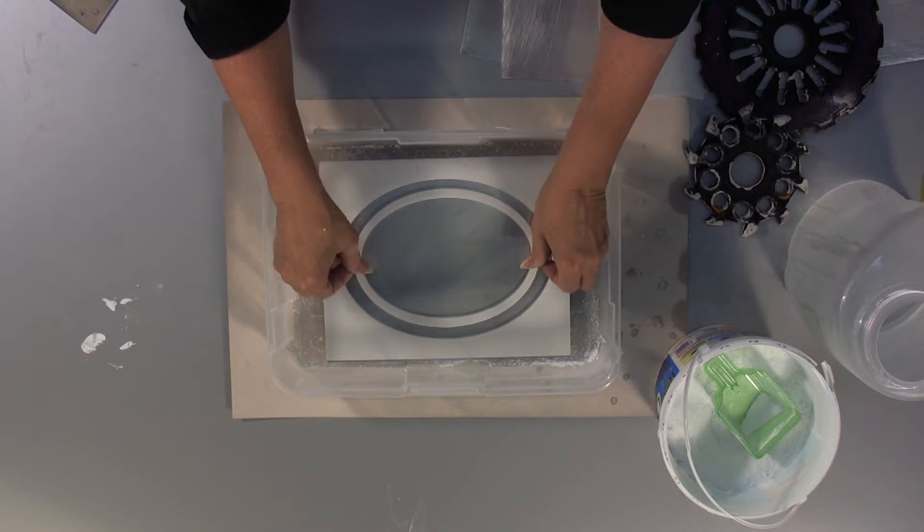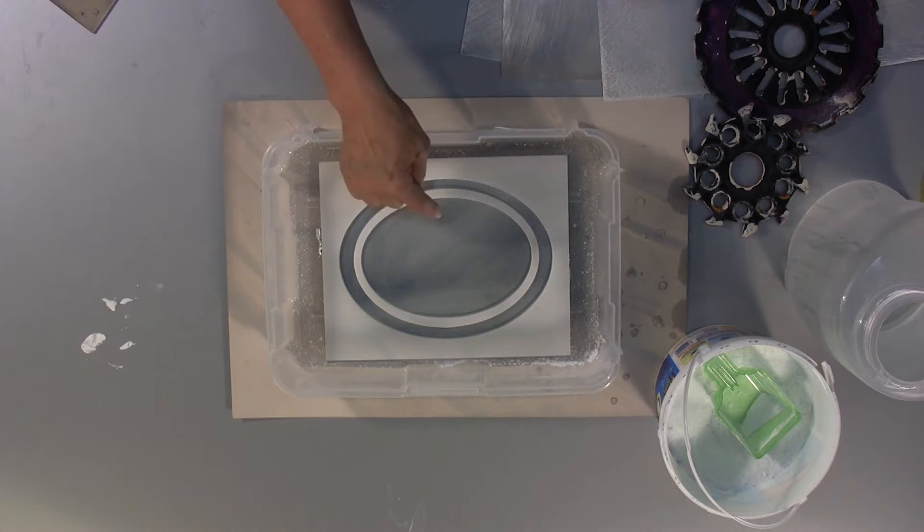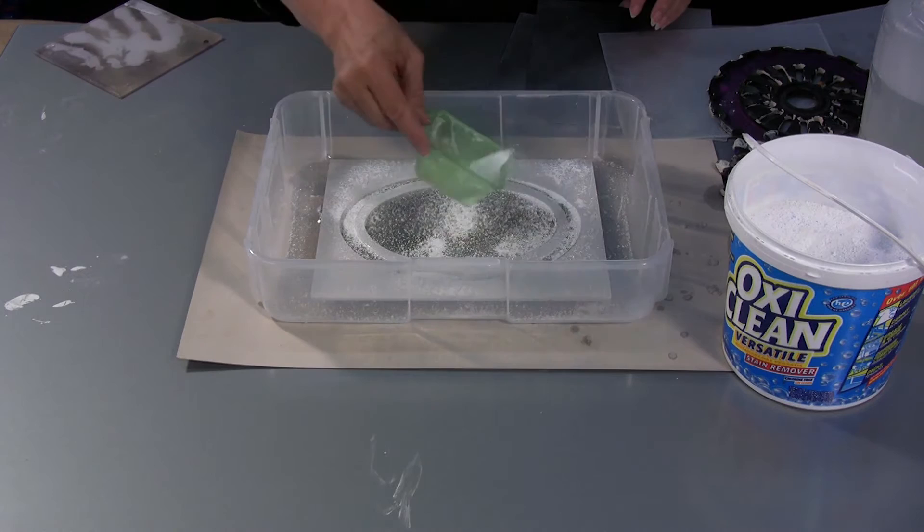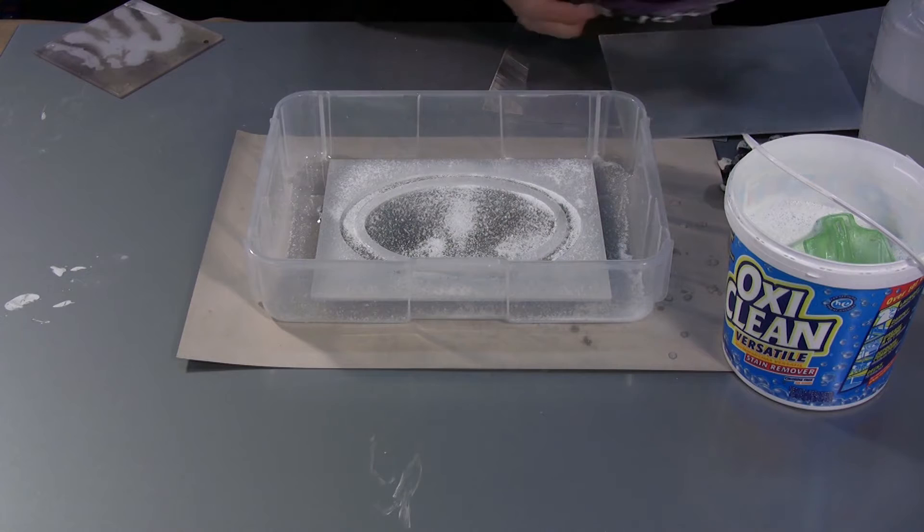Now what's going to happen here is anything touching the metal is going to keep the metal shiny. Anything that is exposed will get aged. I'm going to be careful not to get piles of this OxyClean on here, because if you do, it will cause a real hard crusty material that's very, very hard to get off.